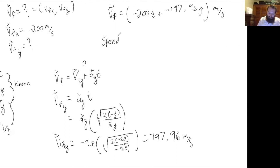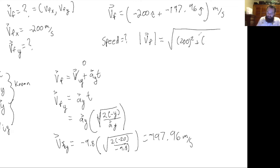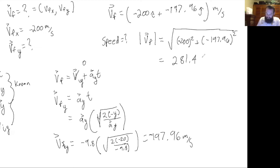To find the final speed — the magnitude of the velocity vector — use the Pythagorean theorem: √(200² + 197.96²). Plugging this into a calculator gives 281.4 meters per second for the final speed of the cannonball when it strikes the pirate ship. This has been a Dr. Straussbaum lecture.